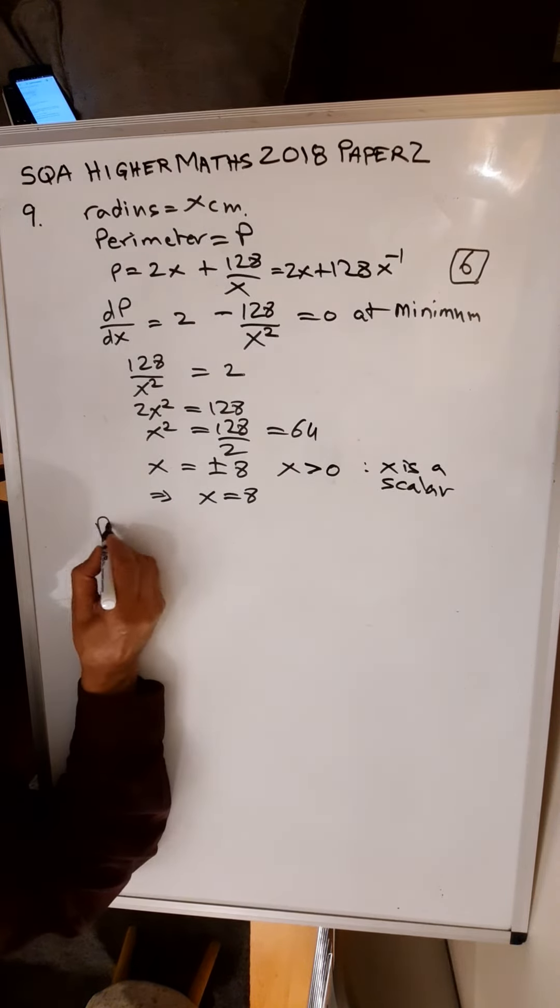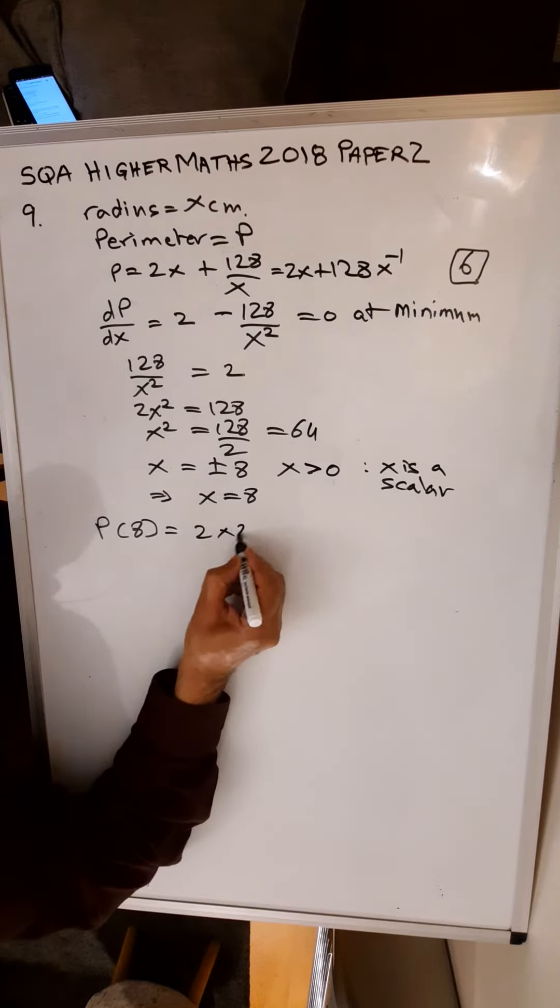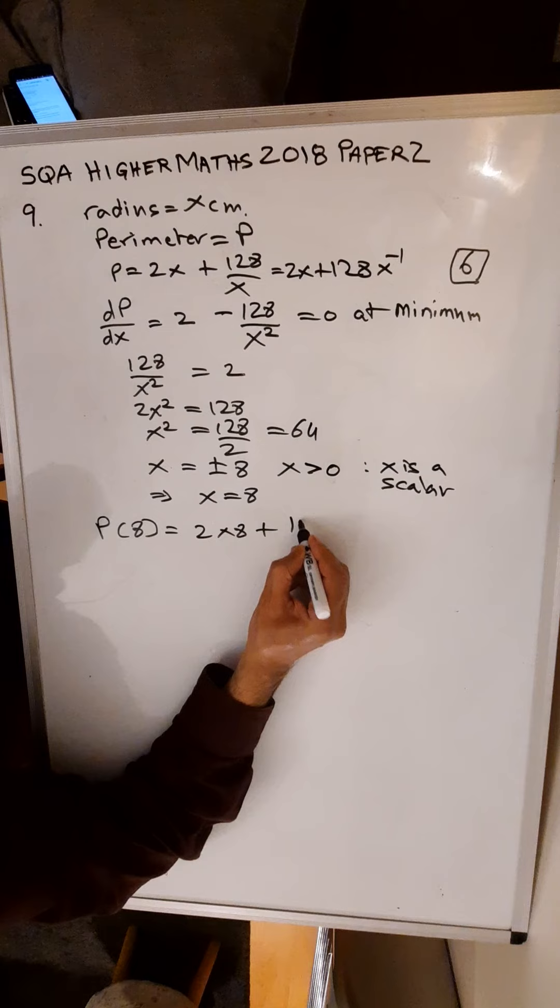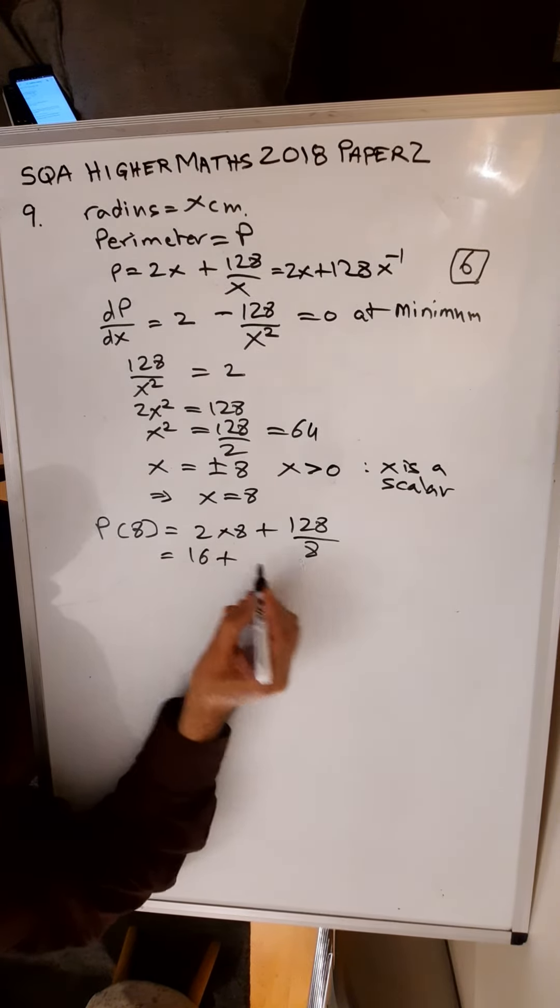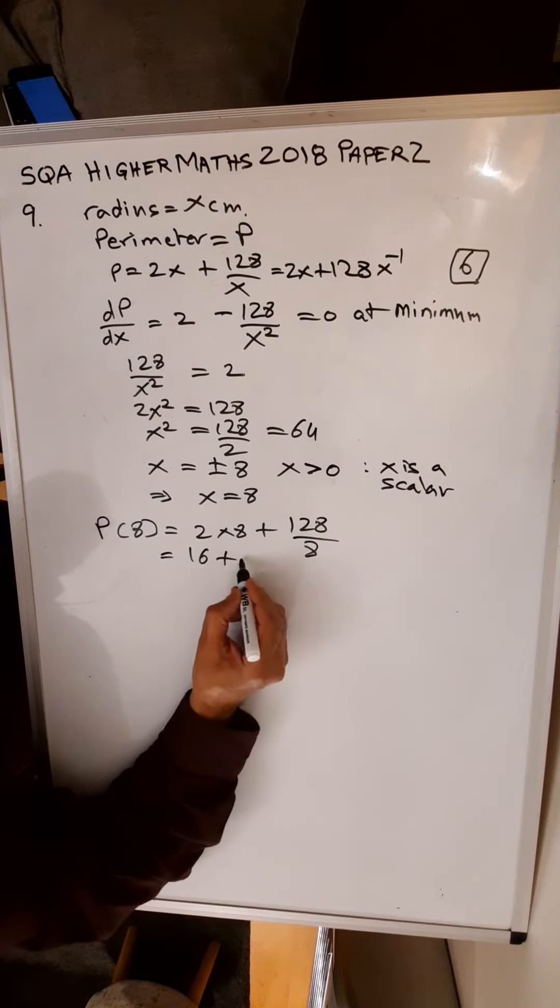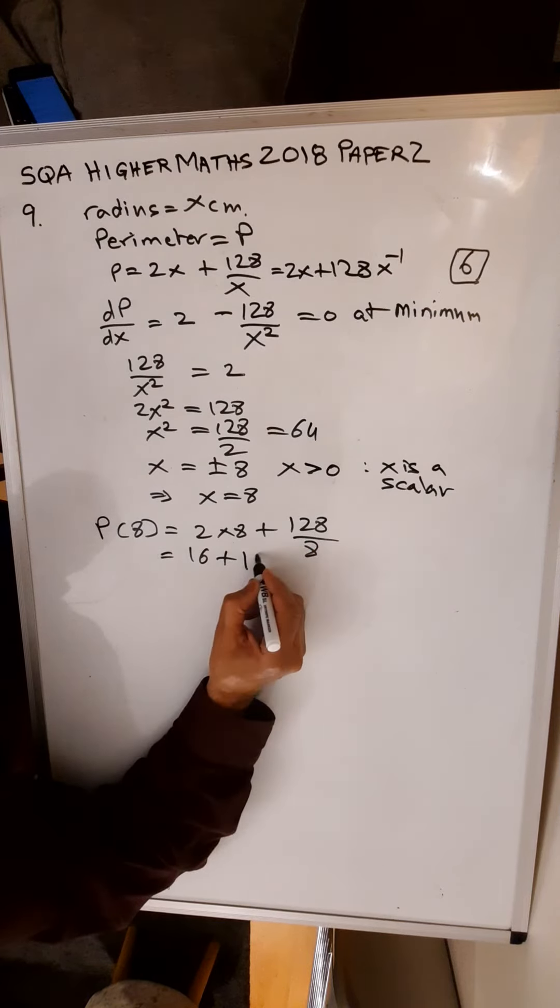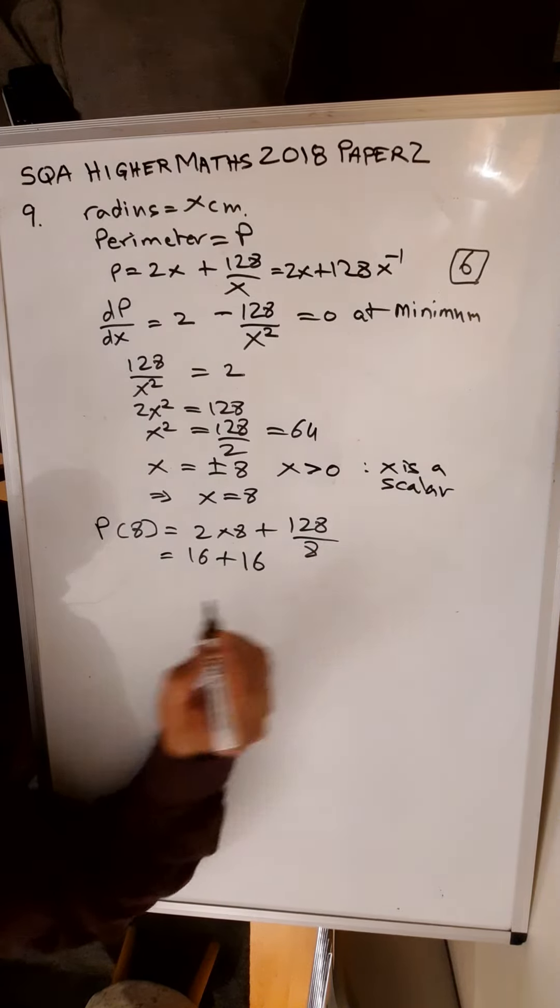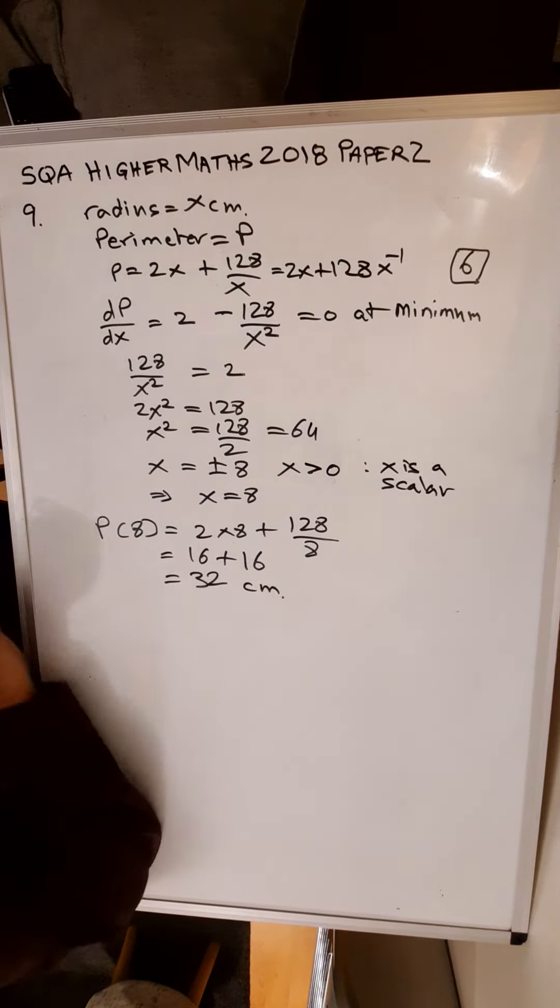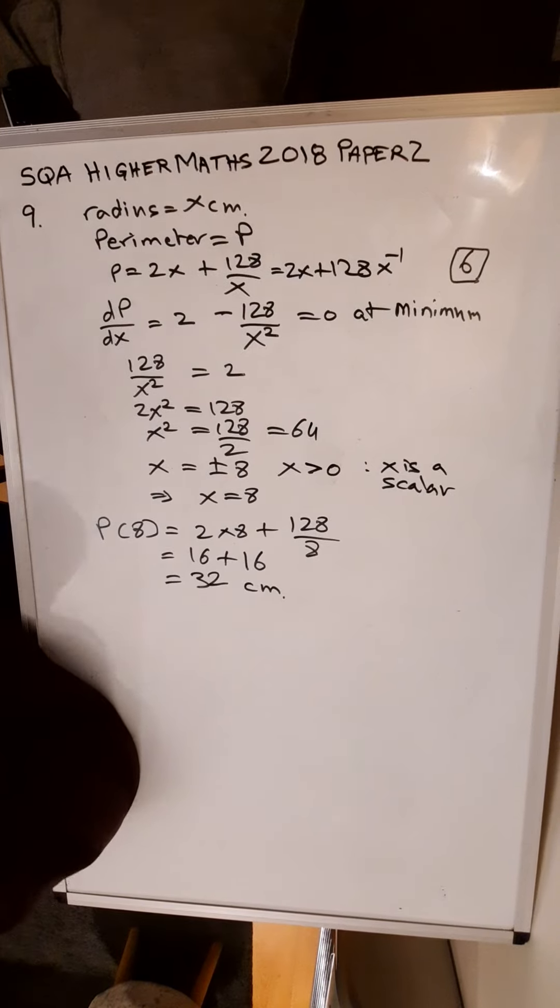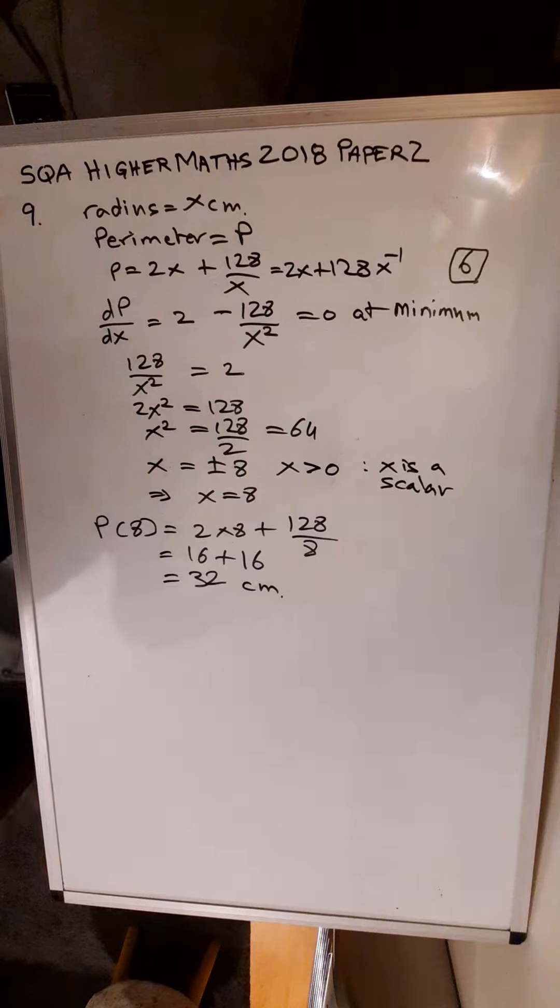The parameter p when x is 8 equals 2 times 8 plus 128 over 8, which is 16 plus 16, equals 32. So the minimum parameter is 32 centimeters for six marks.